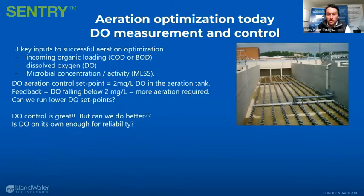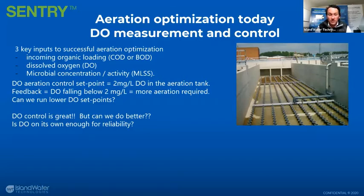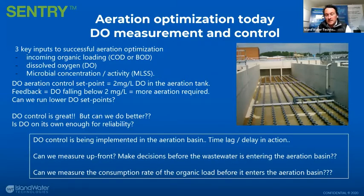When optimizing aeration, there are three key pieces of information we want. First, we want to understand the incoming organic load — how much food is available for the biomass, ideally in real time and before it even hits the bioreactor. Second, yes, you want to understand your DO — how much DO you're providing to your bioreactors. The two milligrams per liter metric is nice; above that, oxygen really isn't limiting for the biomass. But it would be interesting to look at lower DO set points to save energy. The question is: can we complement DO with other data sets?